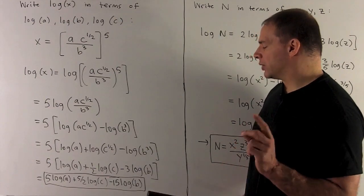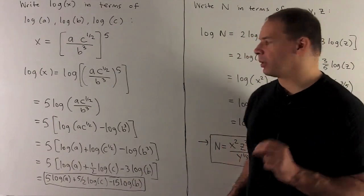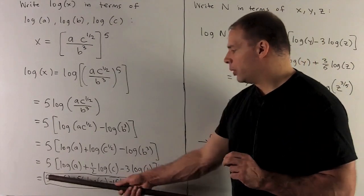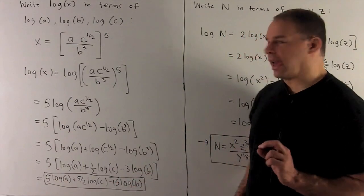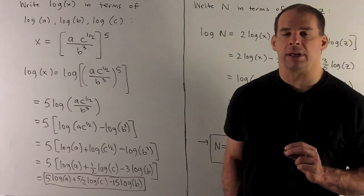Now all I need to do is distribute the 5 through everything. We want to be careful with parentheses. And so we're going to get this for our answer: 5 log A plus 5 halves log C minus 15 log B.